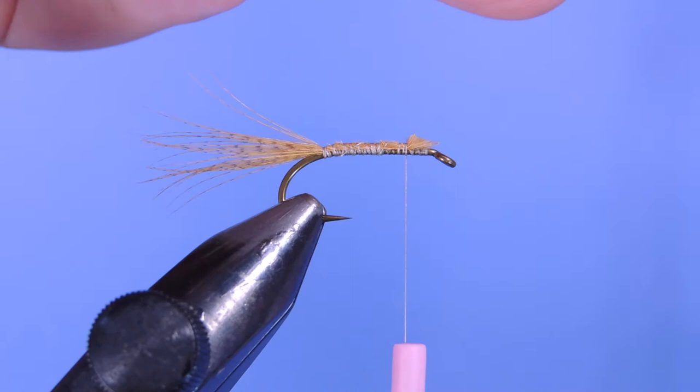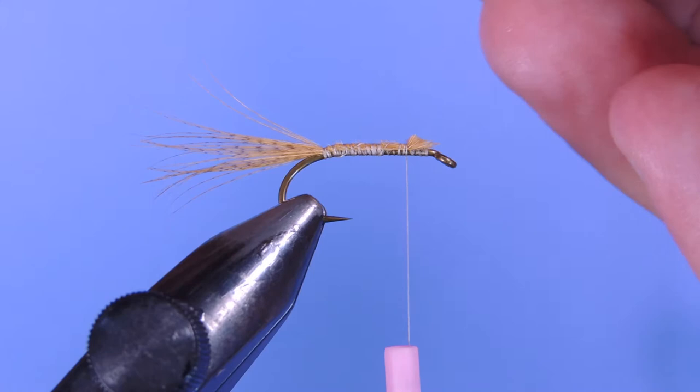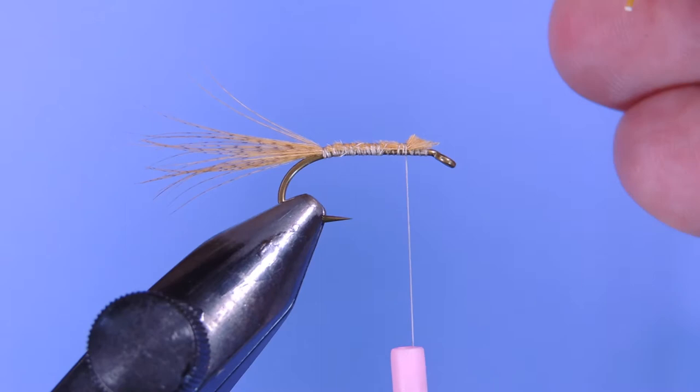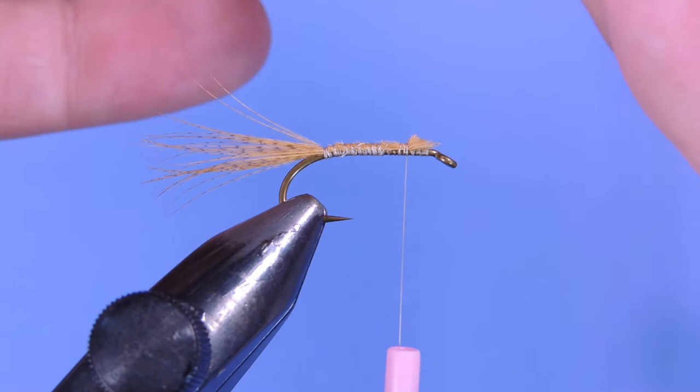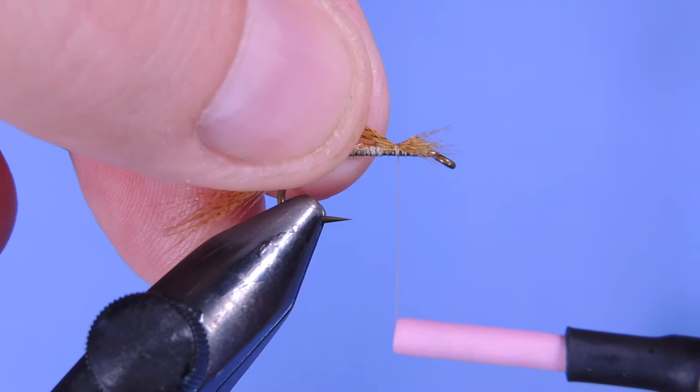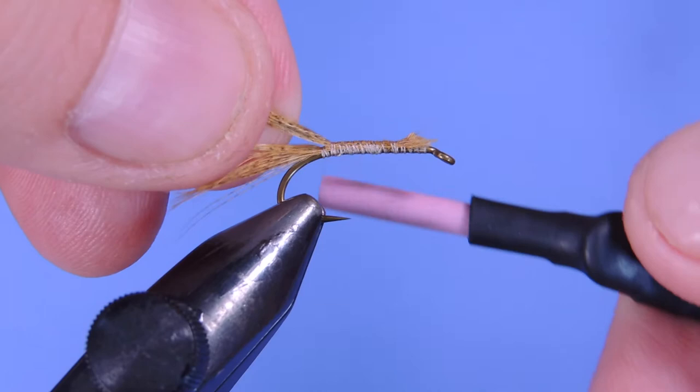Next, I'm going to take a second length of this, tear those wispy ones off the bottom, and we'll get those all matched up again. Tear them off, and I'm going to tie those in by the tips. It's going to form our shell back.